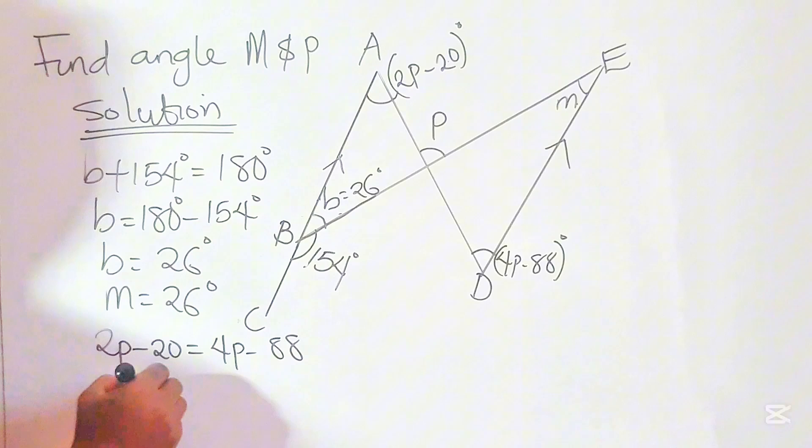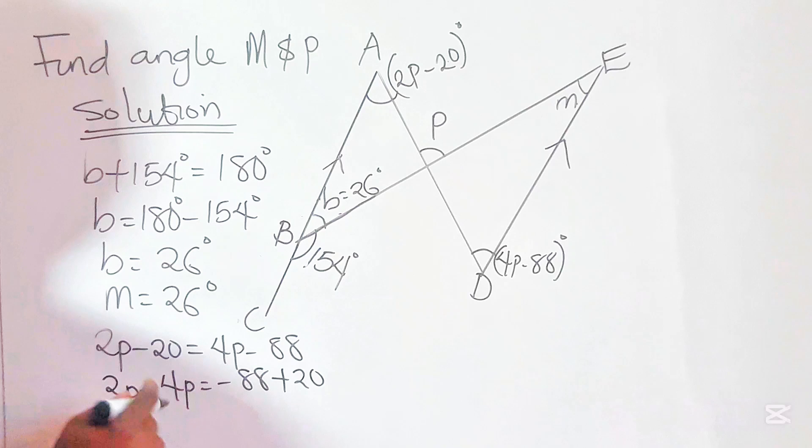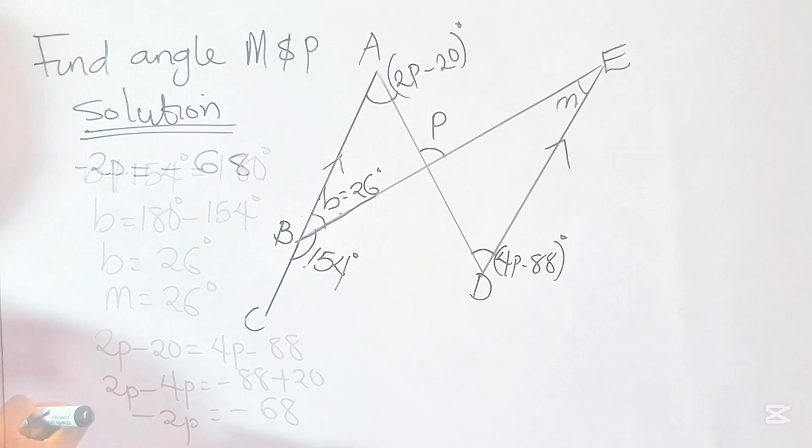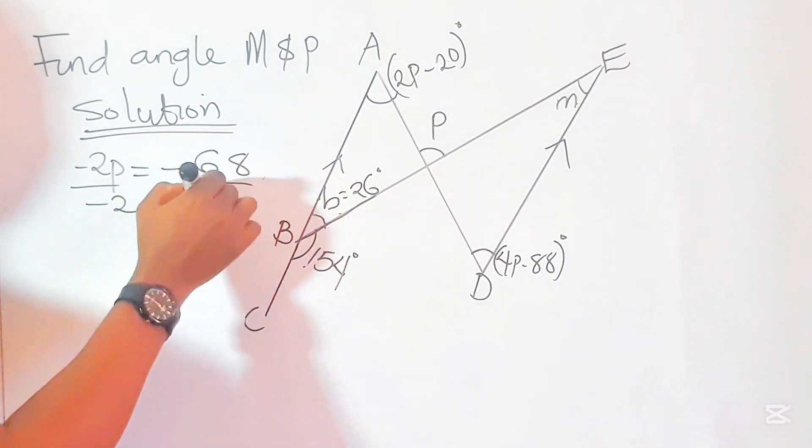We have 2P minus 4P equals minus 88 plus 20. 2P minus 4P will give minus 2P equals minus 68. Let's divide both sides by minus 2.